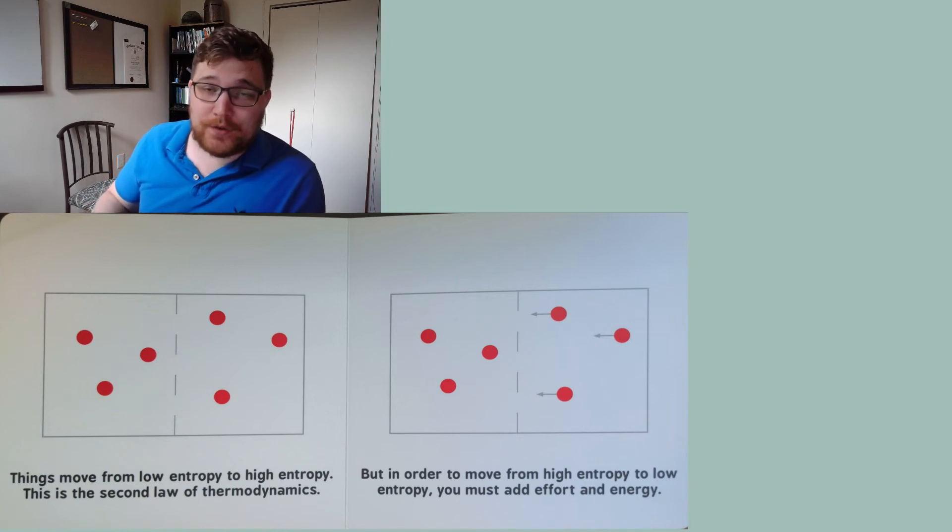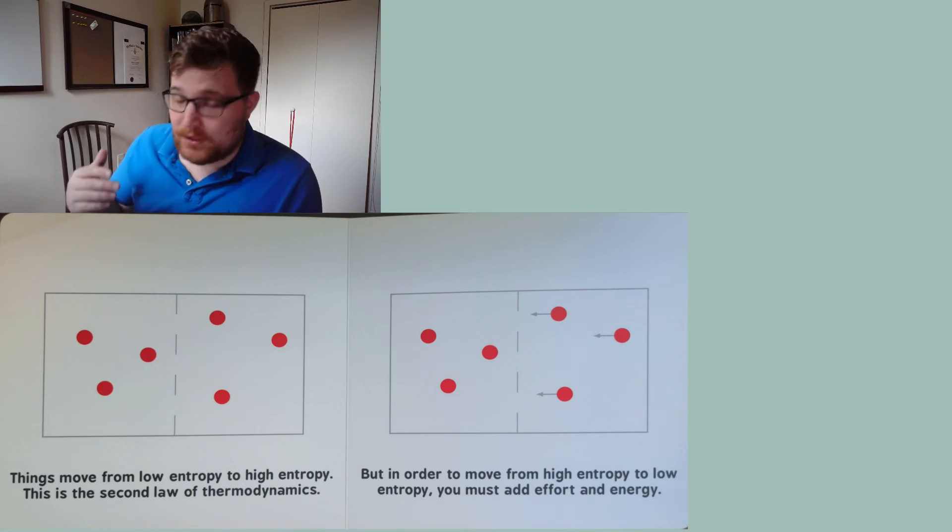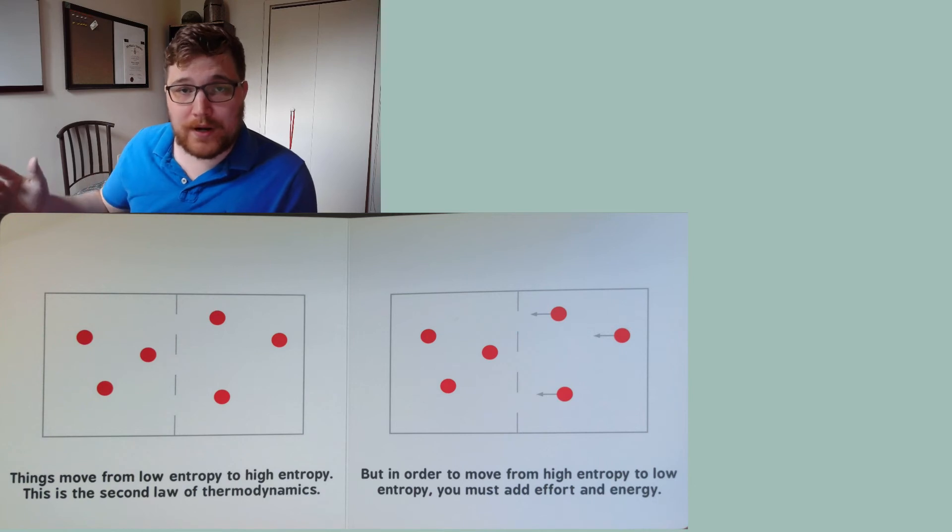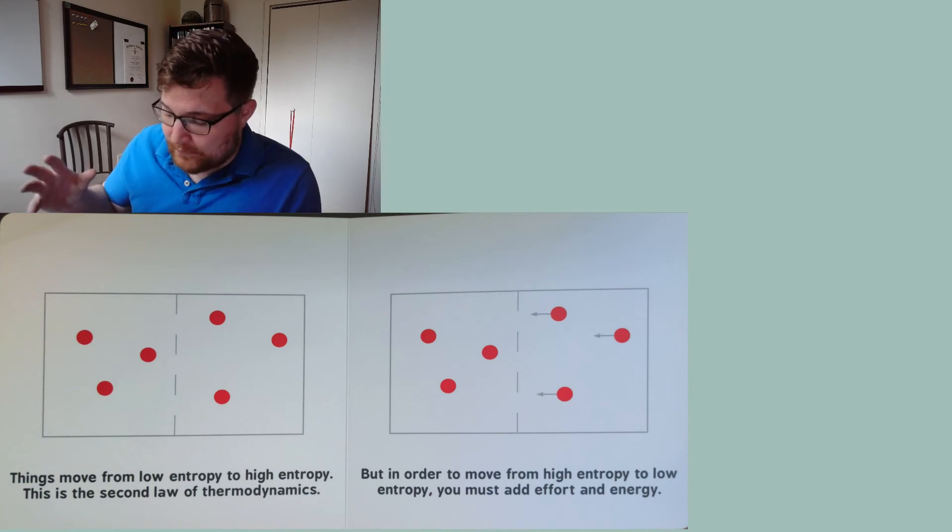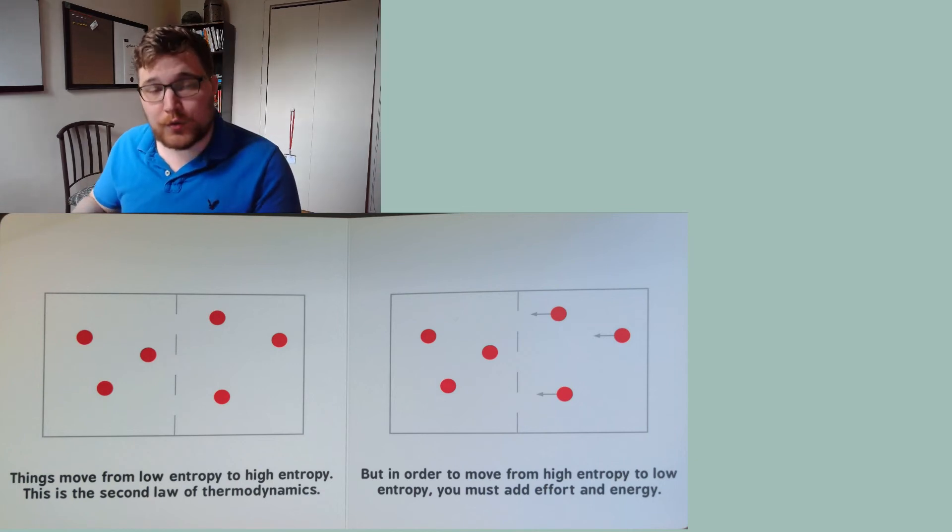But in order to move from high entropy to low entropy you must add effort and energy. Now this is also a usually true statement. So we can do a thought experiment. We can start our system off with all of the particles in the box on the left hand side. Now quite quickly we will flow to a state where we will have usually three particles on either side.